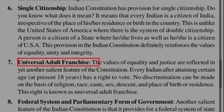The seventh feature is Universal Adult Franchise, where the constitutional value lies in the one man, one vote system. 'Universal' means applied for all, 'adult' means above 18 years, and 'franchise' means right to vote. All adults above 18 years are given the right to vote, restoring the value of equality and justice.